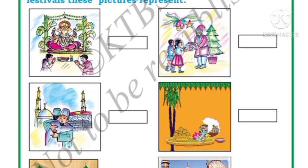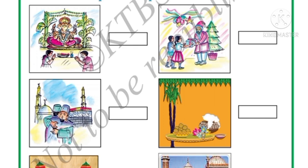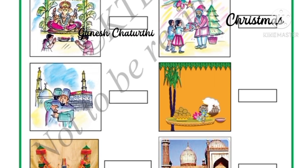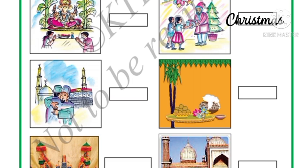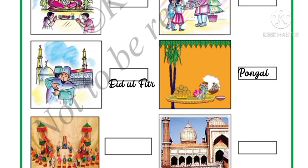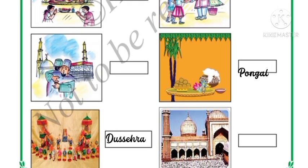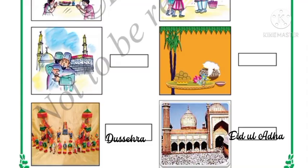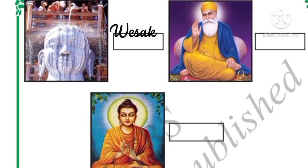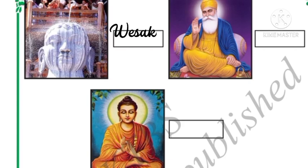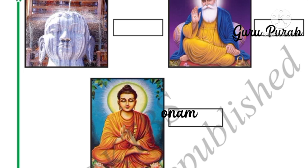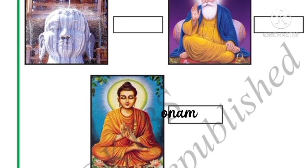Now look at the following pictures and write the names of the festivals they represent. This is Ganesh Chaturthi, this is Merry Christmas, this is Eid, this is Pongal, this one is Dussehra, this is also Eid. Next, this one is Vaisakhi / Guru Purab, and this is Onam.